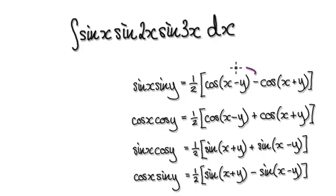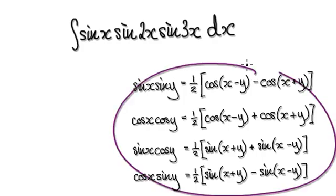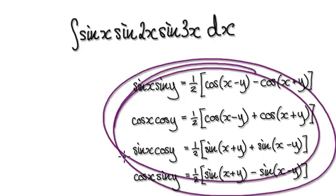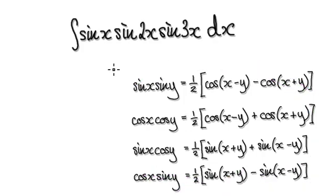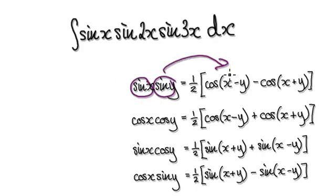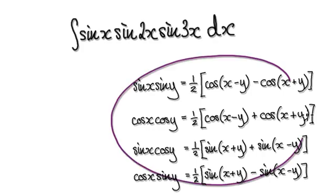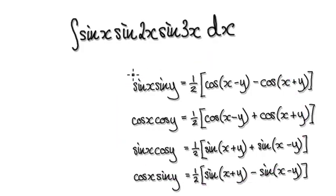You can look this up on the internet. Search for the keywords: trig identities, product to sum. Hopefully this formula will come up if you type in those keywords.